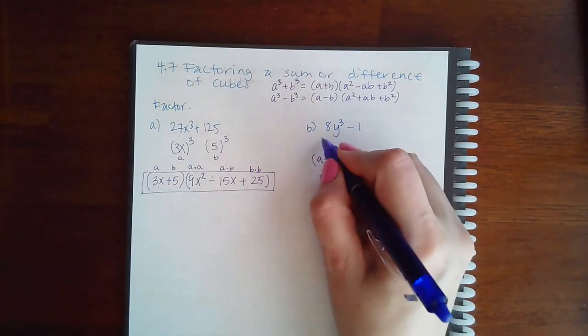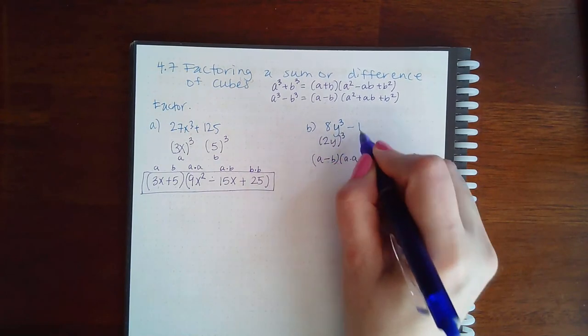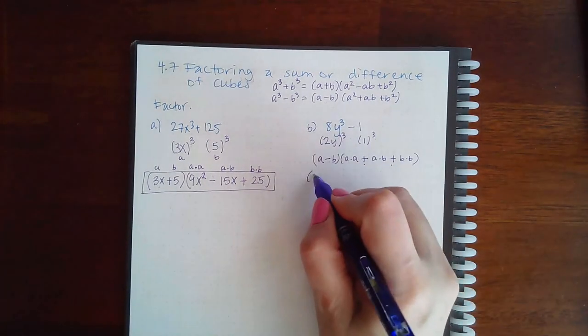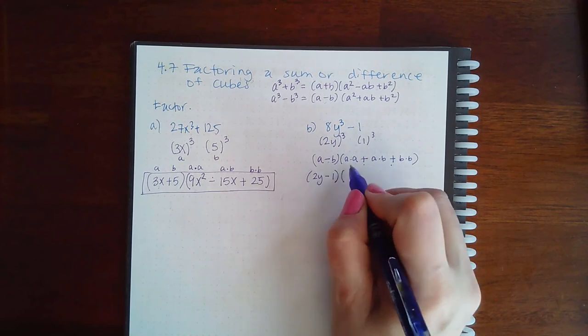So what is a and b? What is being cubed here? I know it's a 2 and a y, and here's just the 1. 1 cubed is 1. So that means a is 2y, the minus sign, b is 1.